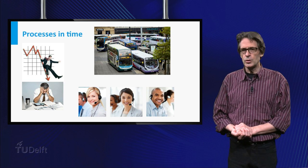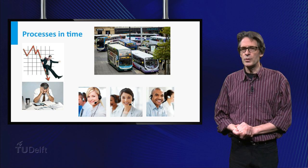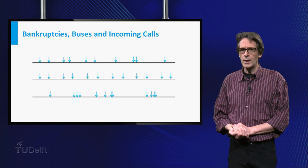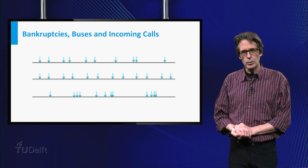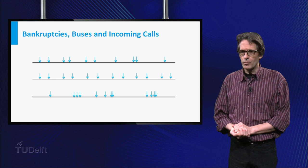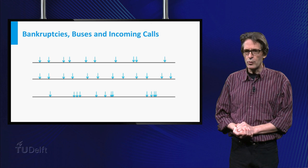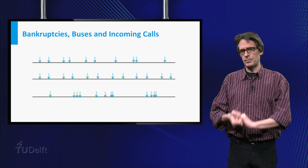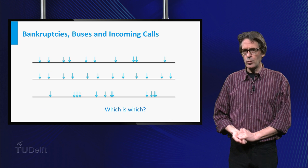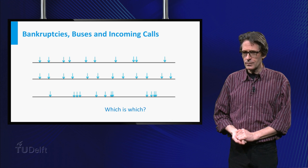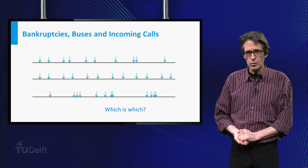The following timelines show possible occurrences of these events. The events are depicted as arrows on the lines. I have omitted the timescales to have you focus on the patterns. Can you see which is which? And which would you consider to be the most random?